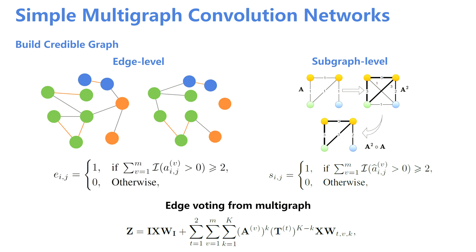If one edge presents in at least two views, we think this edge is credible and conveys confident information across views. Therefore, we keep it in the constructed credible graph. With these two kinds of credible graph, we can perform a simple multigraph convolution as the following equation shows.